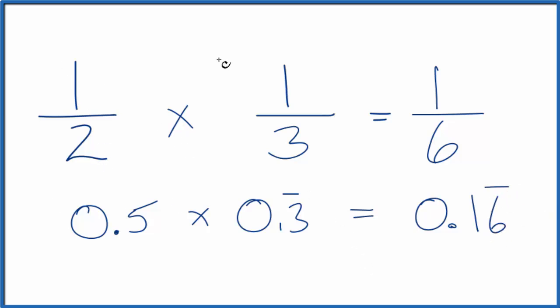So one-half of one-third, that's equal to 0.16 with the six repeating. If you divide one by six, you'll get this answer right here. So we did the first part correctly.